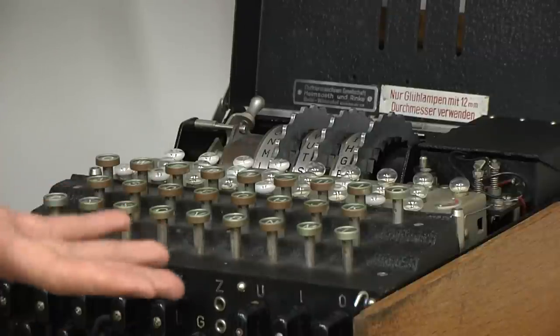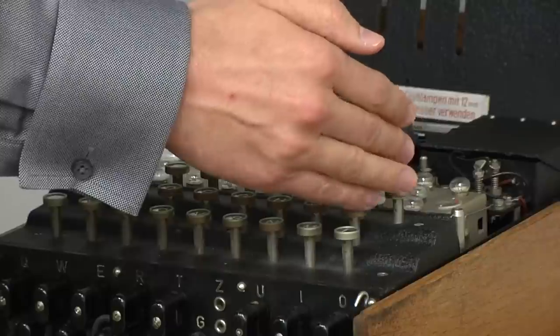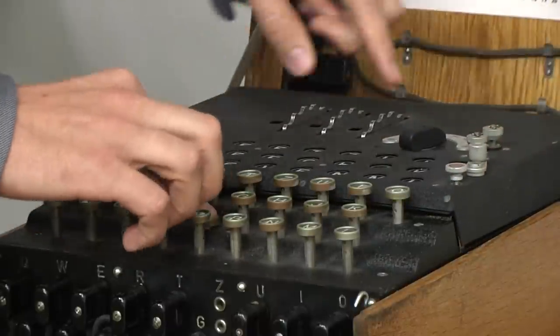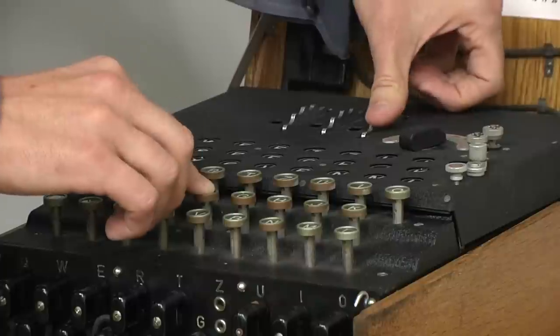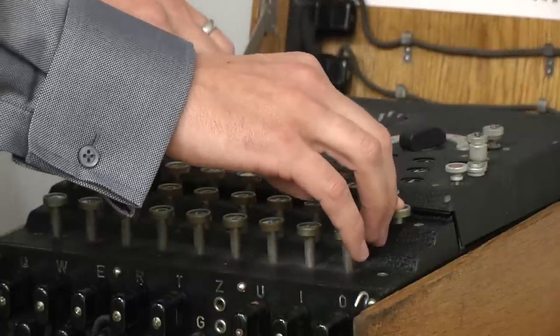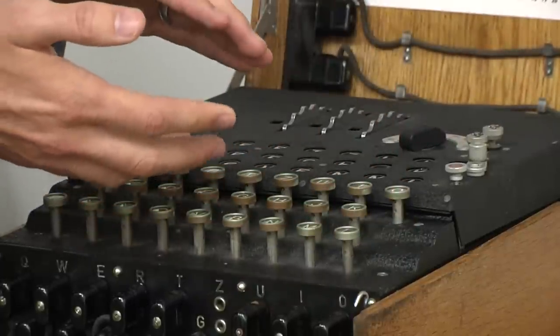One of the flaws of the Enigma machine is that if a letter encrypts to another, the decryption process is the same. If I look, for example, here, F right now encrypts to O. If I back up the settings, O here encrypts to F, and a letter can never encrypt to itself.